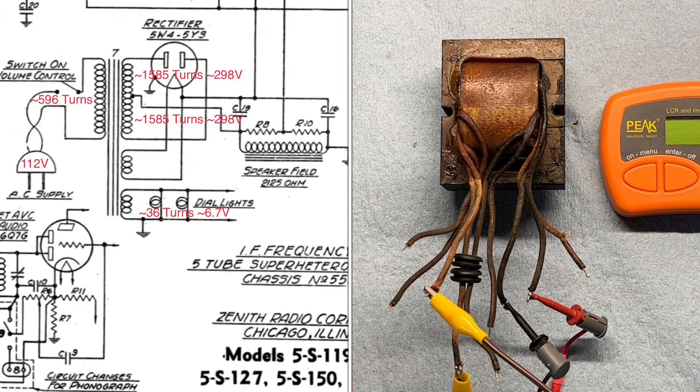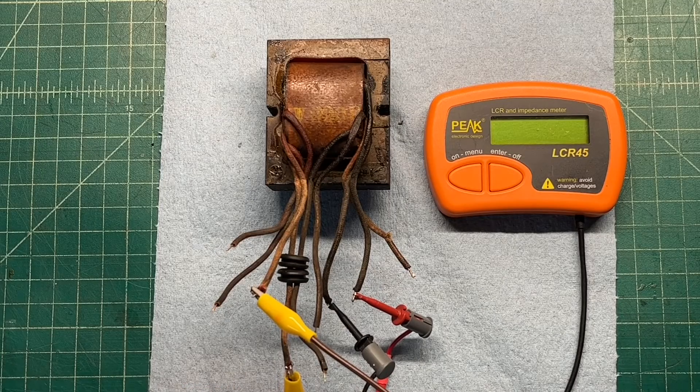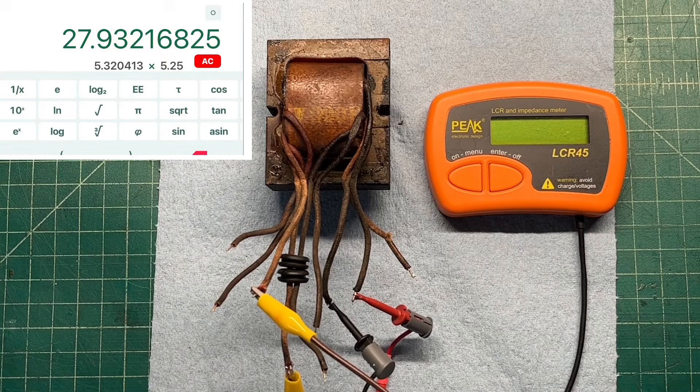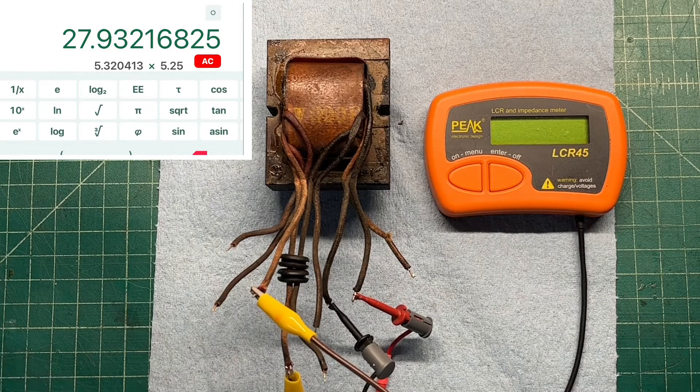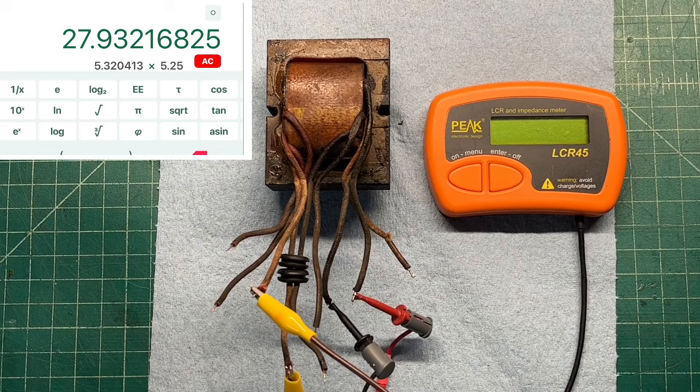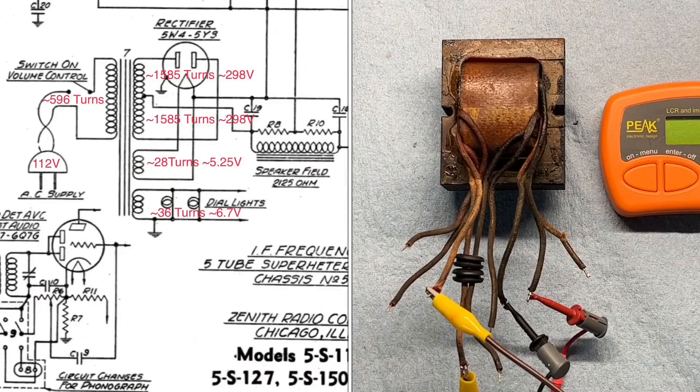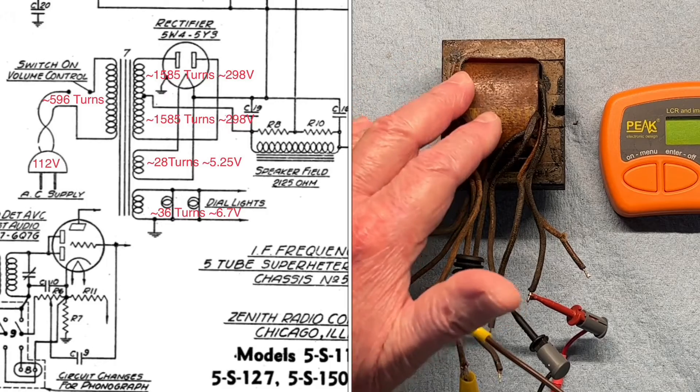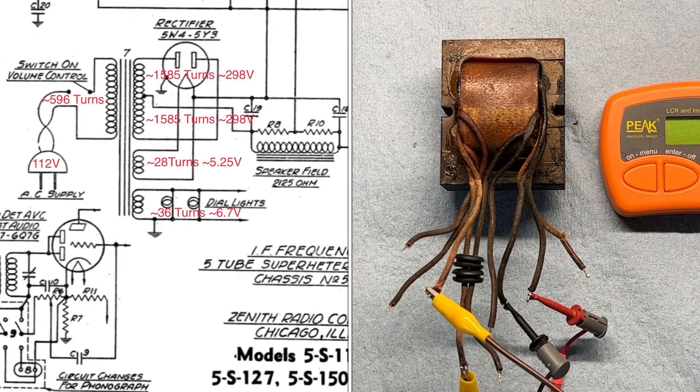And then the same for the 5 volt winding. I can take the 5.3 and some change. Multiply that again with a little bit of an overhead. Let's say 5.25 volts and comes out roughly to 28 turns is what we would have for the 5 volt winding.